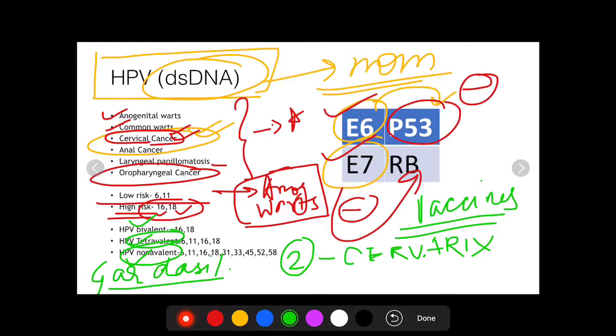The Gardasil tetravalent protects against serotypes 6, 11, 16, and 18, while the nonavalent - and this has been asked in the AIMS November 2017 exam - against which serotypes is HPV nonavalent vaccine effective? Let's remember them. These are 6, 11, 16, and 18 like HPV tetravalent, and the other serotypes which have also been implicated in pathogenesis of cervical cancer.